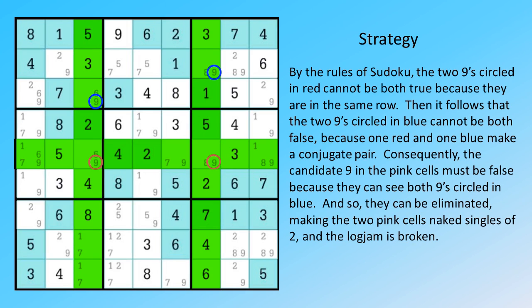By the rules of Sudoku, the two nines circled in red cannot be both true because they are in the same row. Then it follows that the two nines circled in blue cannot be both false because one red nine and one blue nine make a conjugate pair. Consequently, the candidate nine in the pink cells must be false because they can see both nines circled in blue.